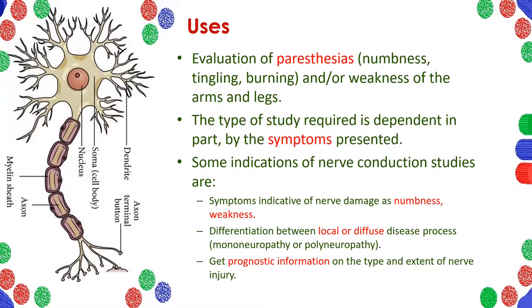The uses of nerve conduction studies include evaluation of paresthesias — that means numbness, tingling, and burning sensation of the arms and legs — which is a common presentation of diabetic neuropathy patients. Sometimes a particular test within the nerve conduction study is prescribed based on the type of symptoms the patient presents. If only one arm or leg has numbness and tingling, the condition is mononeuropathy. If multiple arms and legs are affected, it is polyneuropathy, usually a presentation of diabetic patients. These studies are not only helpful in diagnosis, but also have prognostic value — we can find out whether the disease is at an early, mid, or late stage, and whether the treatment given is effective.